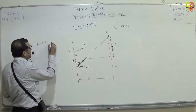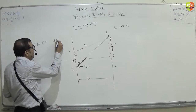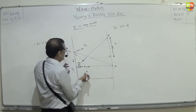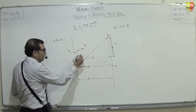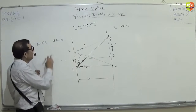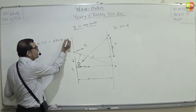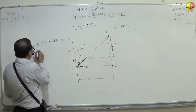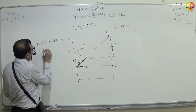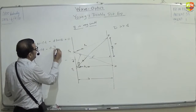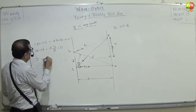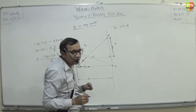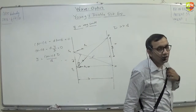The central maxima is below, so S2 travels more actual path. There will be a minus sign here. When this becomes zero: mu minus 1 into t minus d·y/D equals zero. So y equals mu minus 1 into t times D divided by small d. This is the location where the central bright fringe will be shifted to.